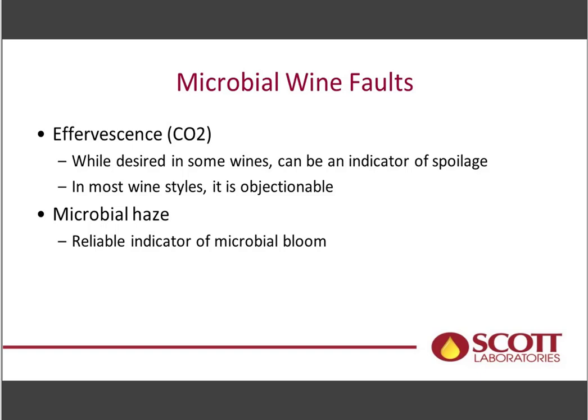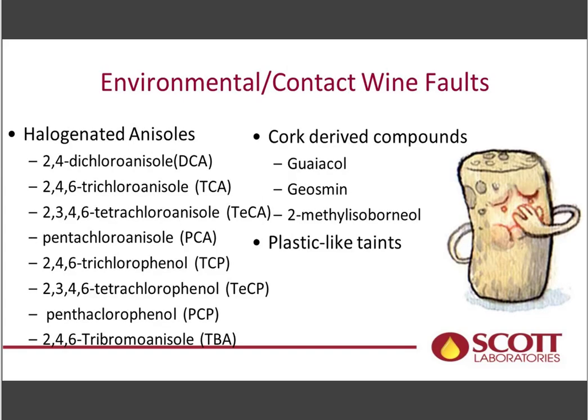Effervescence in most wine styles is objectionable, and it's also a good indicator something is wrong. Bubble formation in your tank or bottle typically means a microorganism is producing CO2. If you have both effervescence and haze, that's usually a clear indication of microbial bloom — and you probably have near-zero SO2. Take care of that immediately.